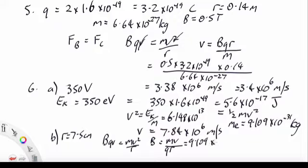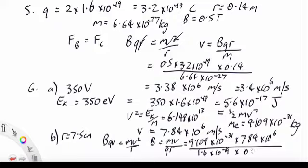9.109 by 10 to the minus 31, we're just plugging in numbers here, 7.84 by 10 to the 6, then we have the 1.6 by 10 to the minus 19, and it was 0.75 meters. And that gives us 5.9 by 10 to the minus 4 tesla.